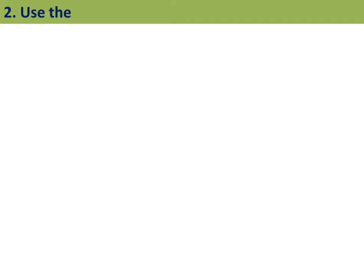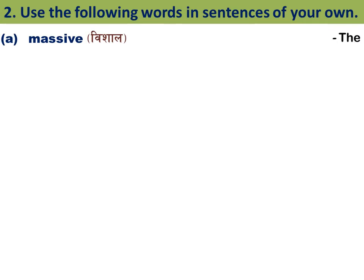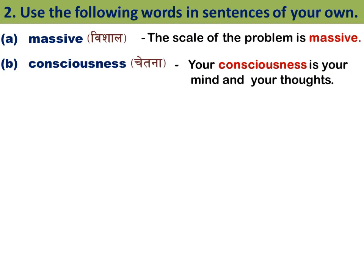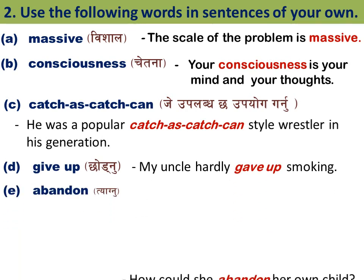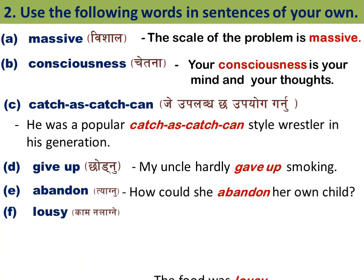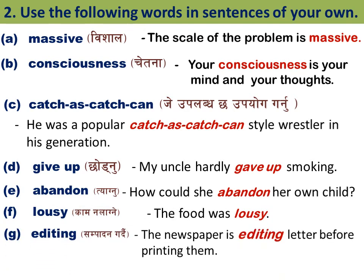Question Two: Use the following words in sentences of your own. A: 'Messy' — The scale of the problem is messy. B: 'Consciousness' (chetana) — Your consciousness, your mind and your thoughts catch everything. C: 'Give up' (chhodna) — My uncle hardly gave up smoking. D: 'Abandoned' — How could she abandon her own child? E: 'Lousy' — The food was lousy. F: 'Editing' (sampadan) — The newspaper is editing later before printing.